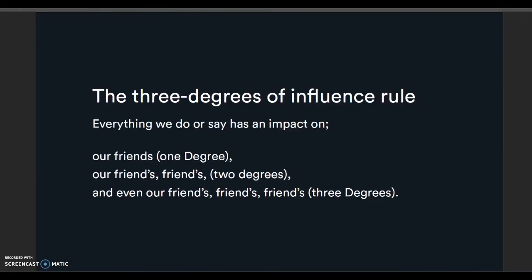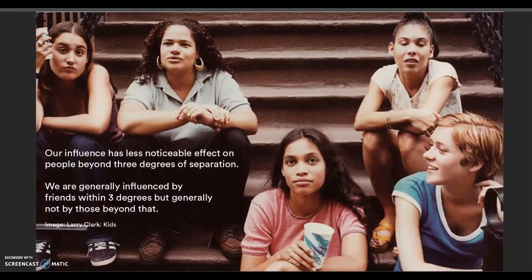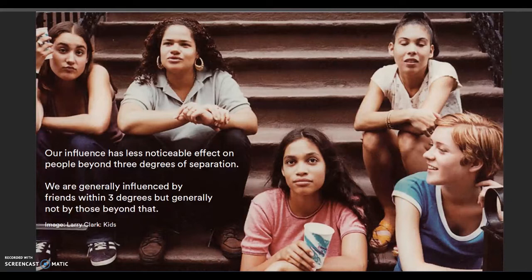The three degrees of influence rule: everything we do or say has an impact on our friends (one degree), our friends' friends (two degrees), and even our friends' friends' friends (three degrees). Our influence has less effect on people beyond three degrees of separation. Also, we're generally influenced by friends within three degrees but not those beyond. It can apply to a wide variety of views, politics, weight gain, happiness, etc.